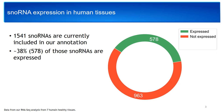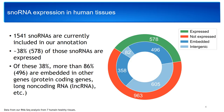There are 1,541 snoRNAs that are currently included in our annotation. From this number, about 38% of snoRNAs are expressed according to our RNA-seq data from 7 human tissues, as you can see by the green area of the pie chart. Of these expressed snoRNAs, more than 86%, which correspond to 496 snoRNAs, as you can see by the dark blue color, are embedded in other genes such as protein-coding genes and long non-coding RNAs.